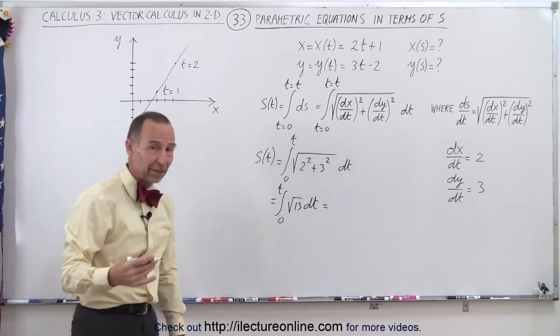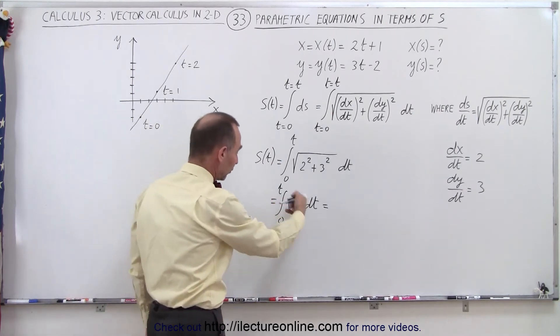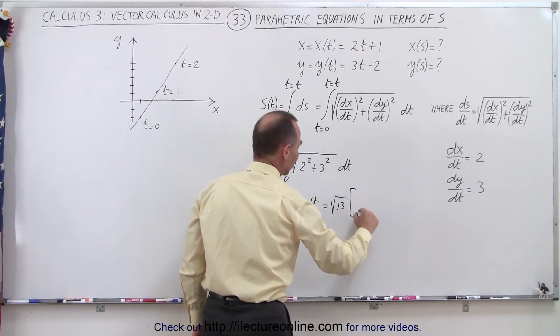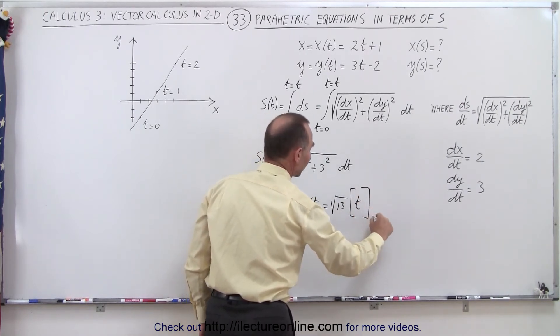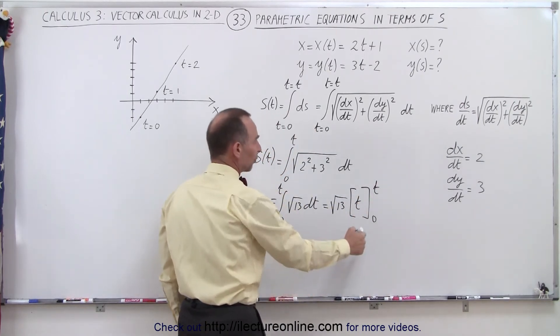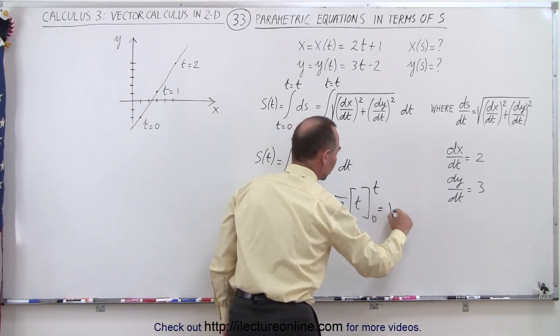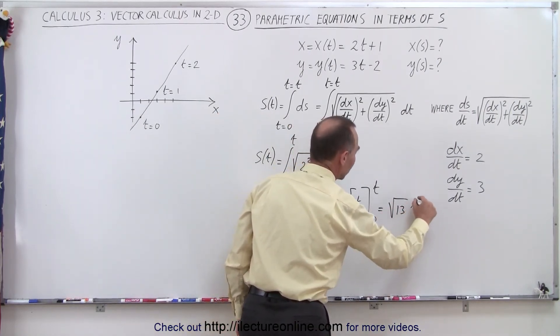The only thing we have to integrate is dt. The square root of 13 comes outside the integral sign, so this becomes the square root of 13 times t evaluated from 0 to t. And of course, when we plug in 0, we get nothing, plug in t, we get t. So this is equal to the square root of 13 times t.